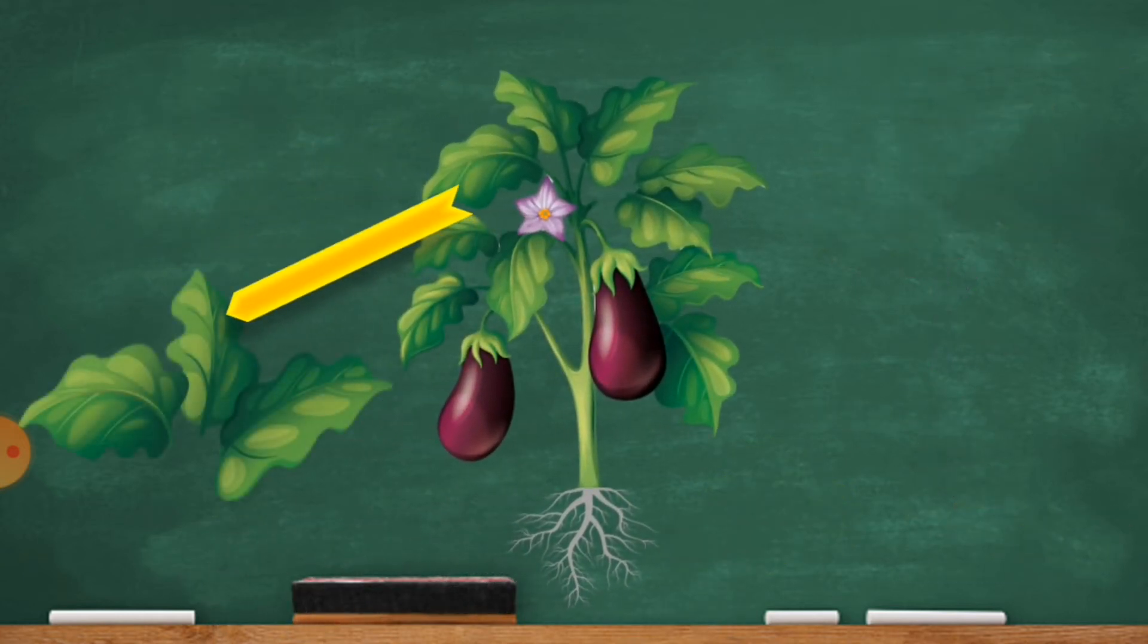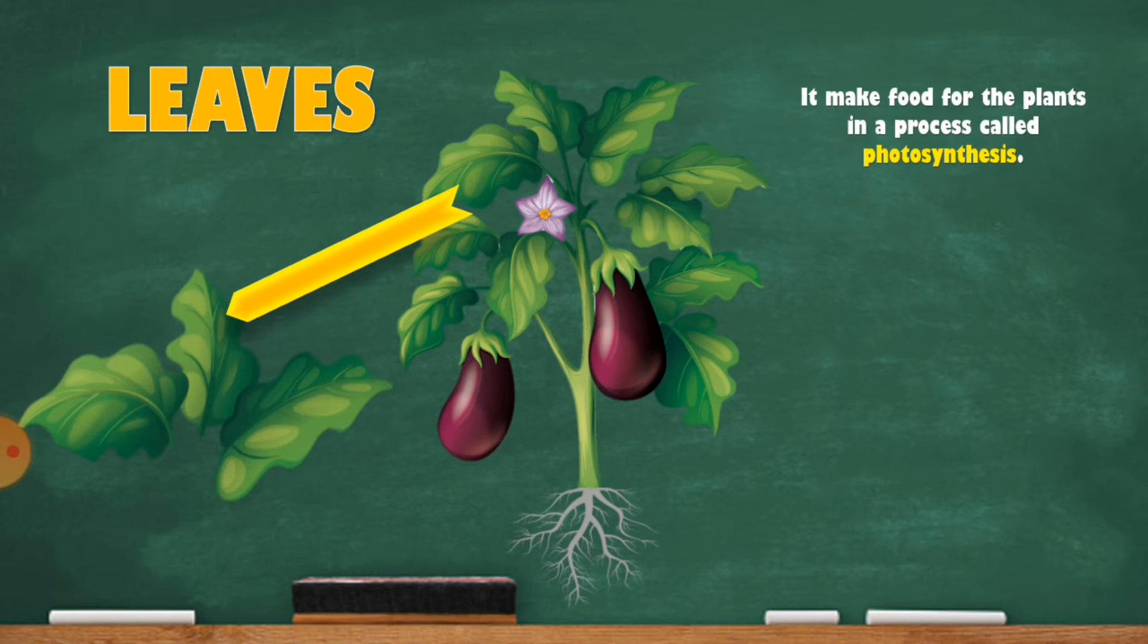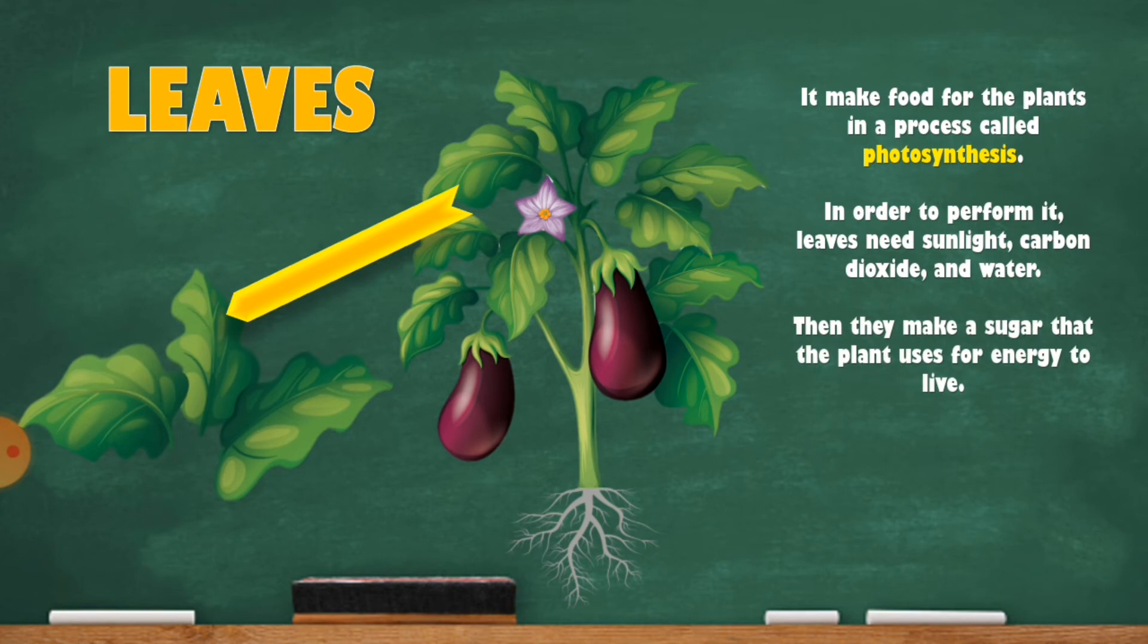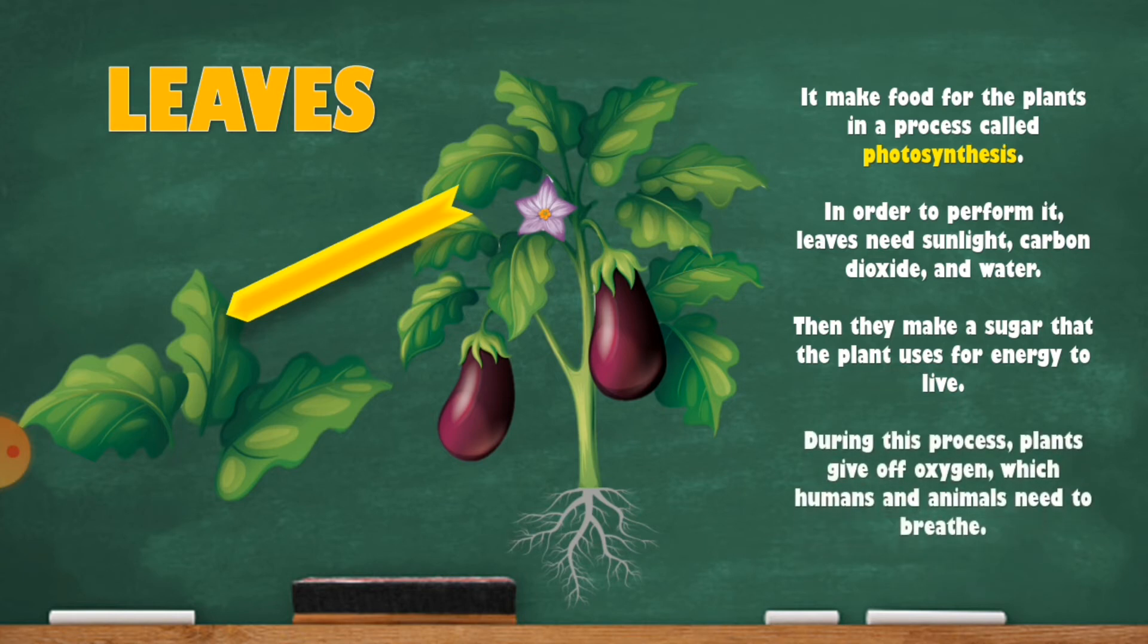Now we will talk about the leaves. It makes food for the plants in a process called photosynthesis. In order to perform it, leaves need sunlight, carbon dioxide, and water. Then they make a sugar that the plant uses for energy to live. During this process, plants give off oxygen which humans and animals need to breathe.